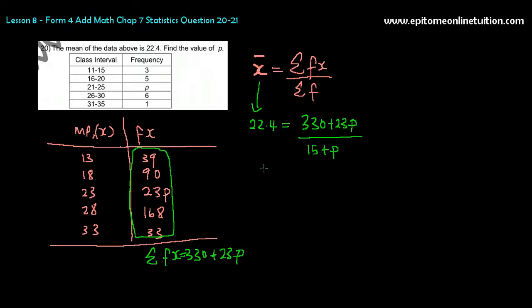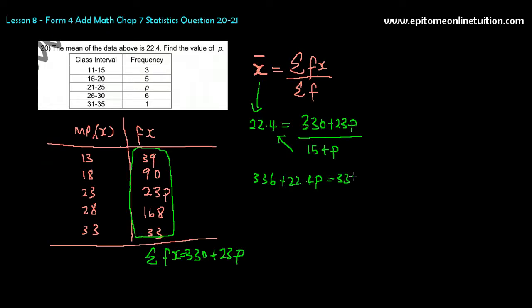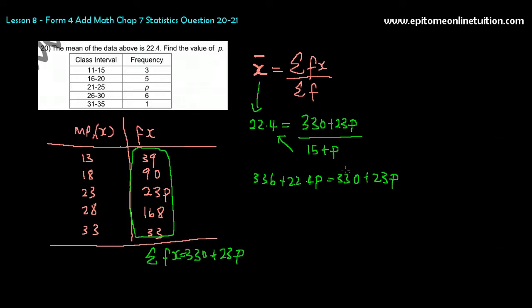So now solve this. So 15 plus p times 22.4, that gives you... Let's shift this up. So you get 336 plus 22.4p equals to 330 plus 23p.